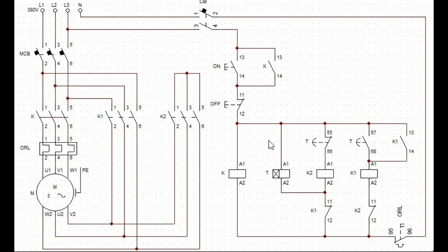Contactor K normally open contact 13 and 14 will turn to closed contact and continue to supply power, while on switch contacts 13 and 14 become open after releasing the push button.